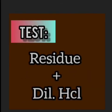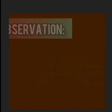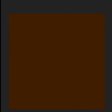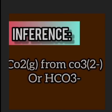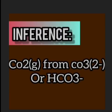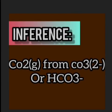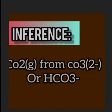For the fourth test: take the light green residue plus dilute HCl. From your observation, you will observe effervescence with the evolution of an odorless, colorless gas which turns limewater milky. Whenever carbon dioxide passes through limewater, it turns it milky. From your observation, you can infer that CO₂ from CO₃²⁻ or HCO₃⁻ is present or confirmed. You can include HCO₃⁻ for additional marks.